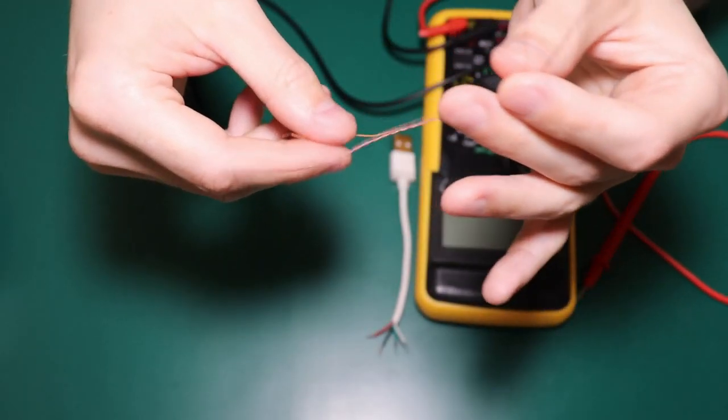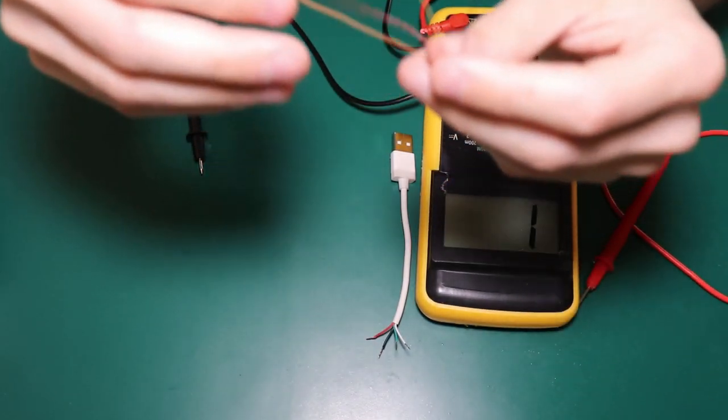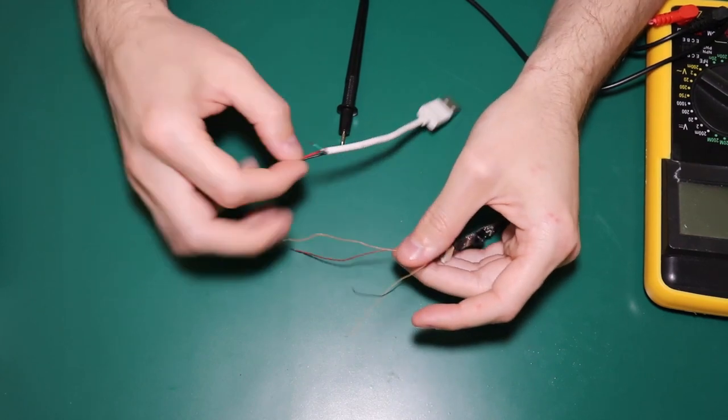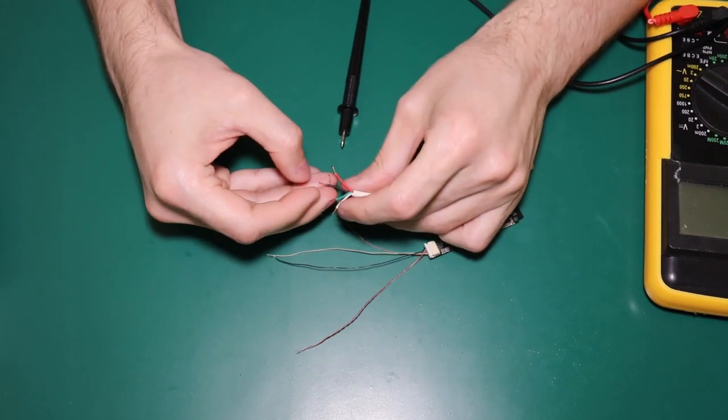One of these two is the positive and then this is the signal cables. So what I will do is I will actually connect this to the ground. I know the black is the ground in the USB.